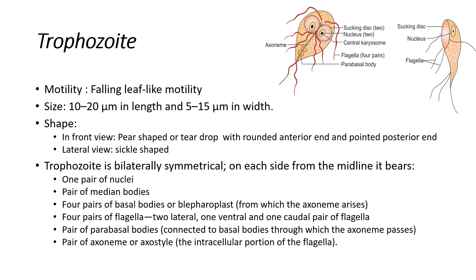The trophozoite is bilaterally symmetrical, meaning when you cut the trophozoite laterally, you can see two identical pieces. Each half contains one pair of nuclei, a pair of median bodies, four pairs of basal bodies, four pairs of flagella, a pair of parabasal bodies, and a pair of axostyles.